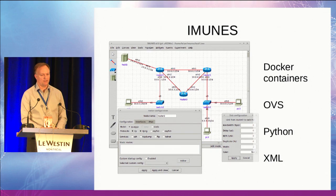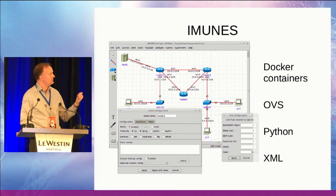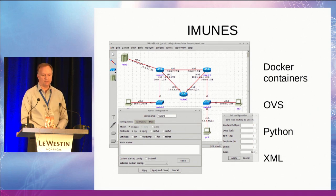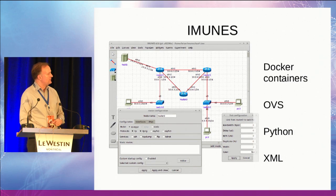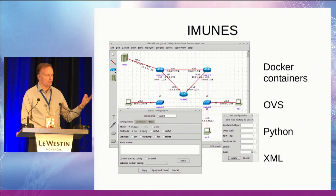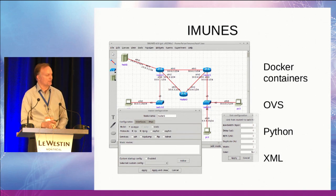IMUNES is another interesting network emulator. The CORE network emulator was originally a fork of IMUNES, so they've both gone their separate ways. Since then, IMUNES has been completely rewritten for Linux. It works with all nodes as Docker containers, and Open vSwitch is the switching technology. Similarly, it uses Python, it's just as extendable, and it uses a similar file format for saving the network topology.